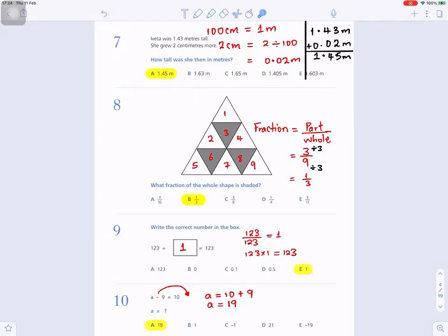Now you can add it. 1.43 meters plus 0.02. Put them in a straight line. The decimal point should be in a straight line. The numbers are in a straight line before you add them. 3 plus 2 will give you 5. 4 plus 0 will give you 4. And then you write the decimal point. And 1 plus 0 will give you 1. So your answer will be 1.45, which is A.